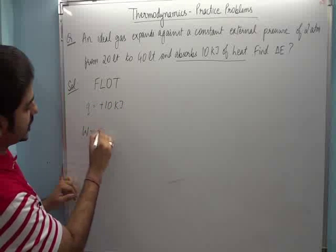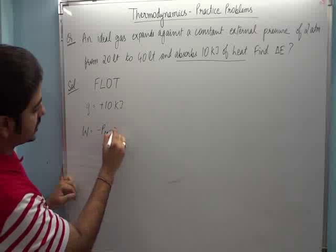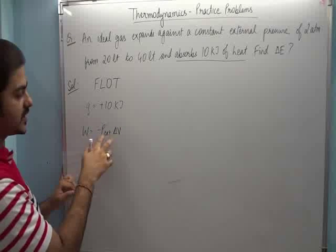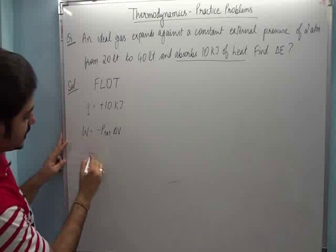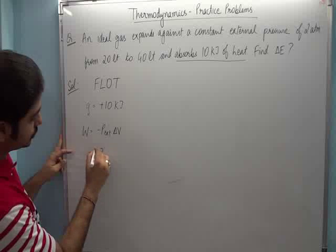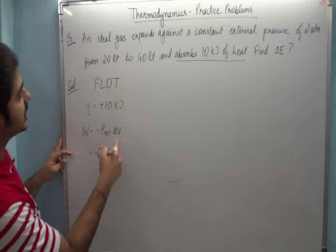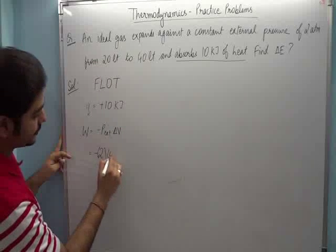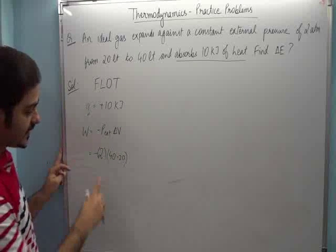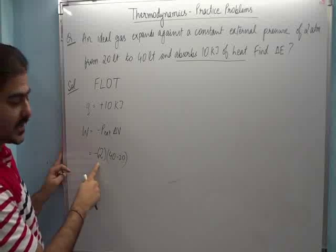Work done is minus P external times delta V. Since P external is constant, I can directly write: minus 2 into delta V. The given values are from 20 liters to 40 liters, so 40 minus 20. But one thing to keep in mind is what unit this work done will have.